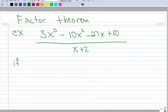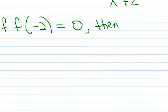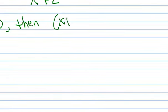if I take the function of the numerator and put in negative 2—this is what you did with the Remainder Theorem—and if I get 0, then I know that x plus 2 is a factor.